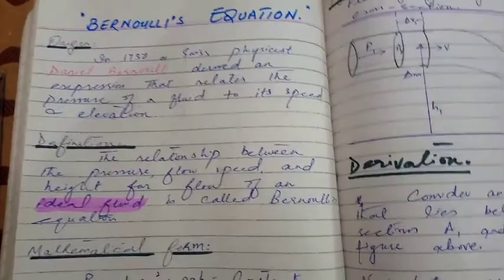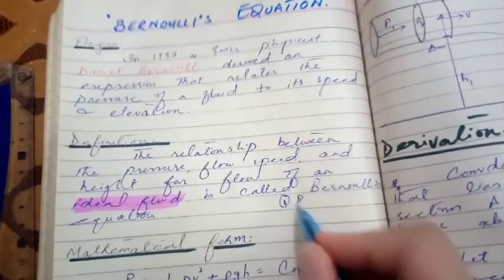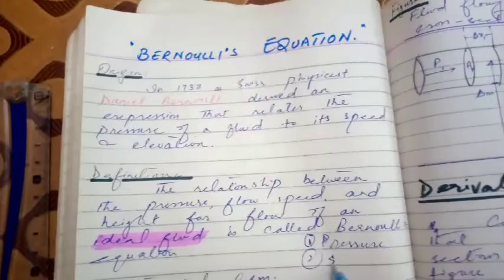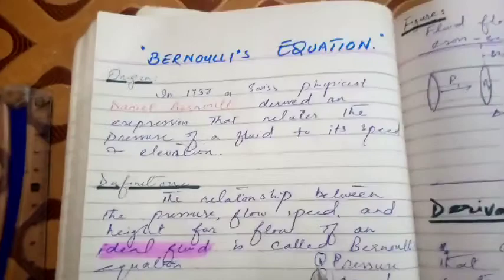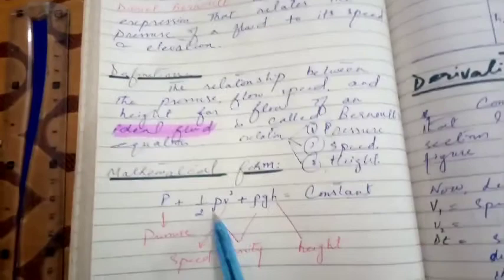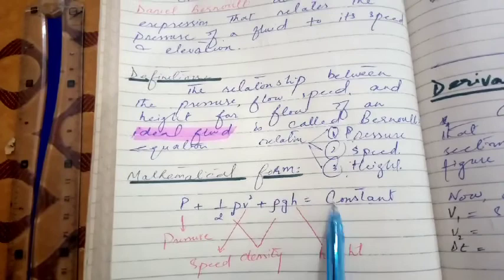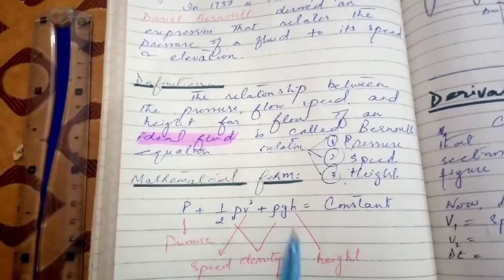The three quantities related are: first, pressure; second, speed; and third, height — but specifically for an ideal fluid. The mathematical form is: p + ½ρv² + ρgh = constant, where p is pressure, ρ is density, v is speed, and h is height.